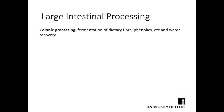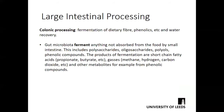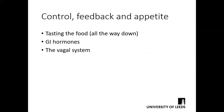From the small intestine, what you haven't absorbed passes into the large intestine for colonic processing — largely fermentation of dietary fiber, phenolics, and other compounds, and water recovery. Gut microbiota ferment anything not absorbed from the small intestine, including polysaccharides, oligosaccharides, polyols, and phenolic compounds. The primary products of fermentation are short-chain fatty acids such as propionate and butyrate, gases like methane, hydrogen, and carbon dioxide, and other metabolites. Water is also removed from intestinal content before it passes to the rectum.